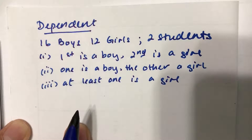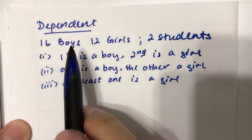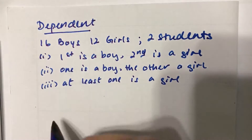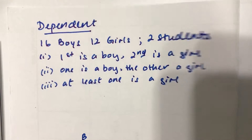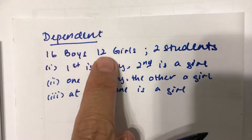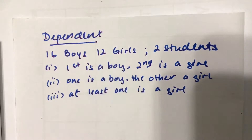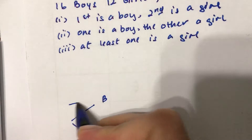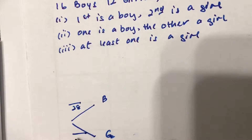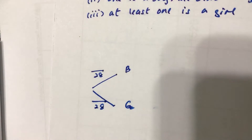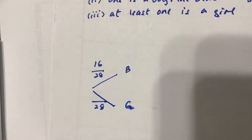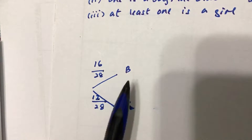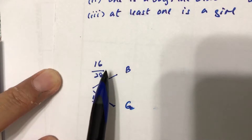Let's draw the tree diagram. We want to pick two students, and since we have boys and girls we have two branches: boy and girl. We have 16 boys and 12 girls, so altogether there are 28 people. We put 28 as the total for both branches.